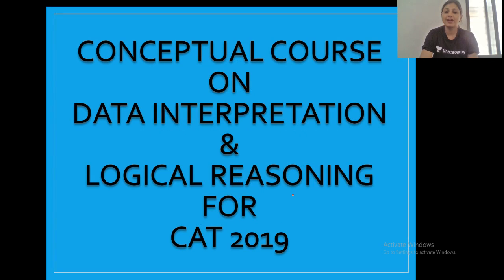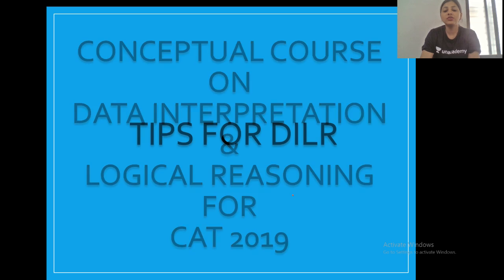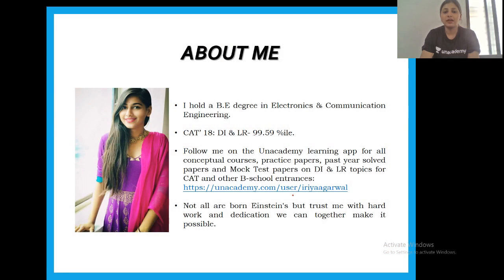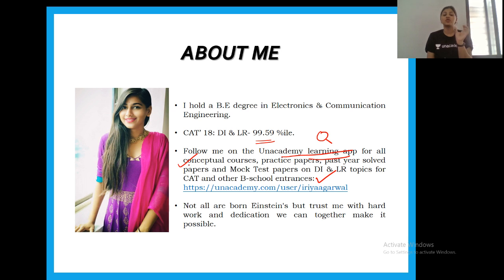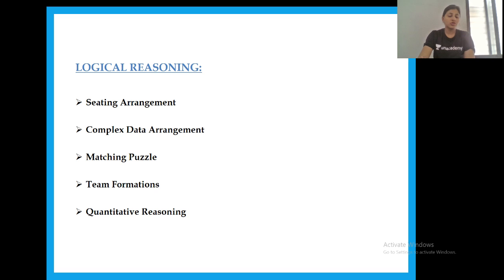Let's begin with our conceptual course on Data Interpretation and Logical Reasoning for CAT 2019. A little about me: I am an Electronics and Communication engineer and I scored 99.59 percentile in the CAT 2018 DILR section. You can also follow me on the AN Academy learning app where you will find conceptual courses, practice papers, past-year solved papers, and mock tests on DILR topics — all free of cost.